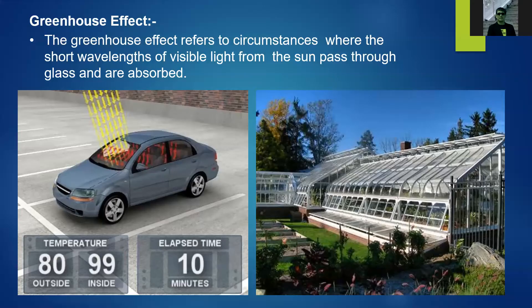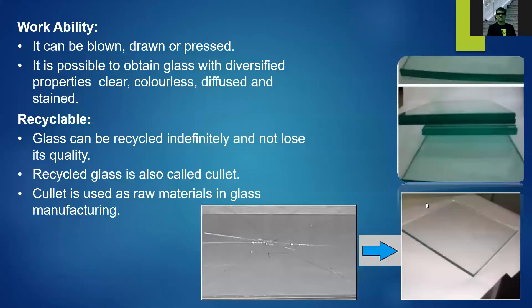This greenhouse effect is also used in creating greenhouses for plants, common in countries with cold climates where they don't want plant leaves to freeze. Glass also has the characteristic of workability — it can be blown, drawn, pressed, or shaped into different sizes. It is possible to obtain glass with diversified properties: clear, colorless, diffused, and stained. Glass is also very recyclable — if you break glass, you can melt it again and form it into another type of glass.